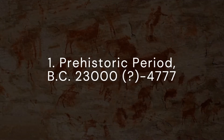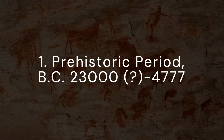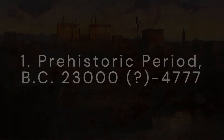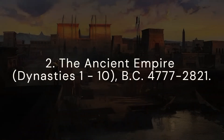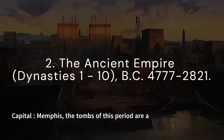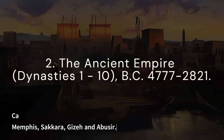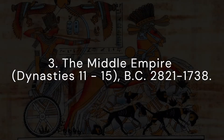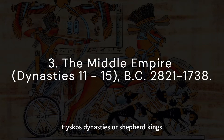1. Prehistoric period, 23000–4777 BC. 2. The ancient empire, dynasties 1–10, 4777–2821 BC. Capital: Memphis. The tombs of this period are at Abydos, Naqada, Memphis, Saqqara, Giza, and Abusir. 3. The middle empire, dynasties 11–15, 2821–1738 BC. Hyksos dynasties, or shepherd kings.